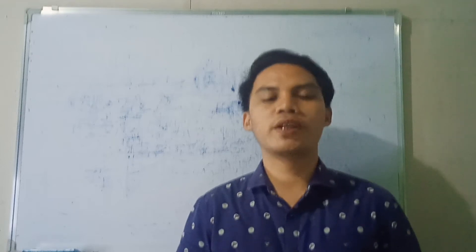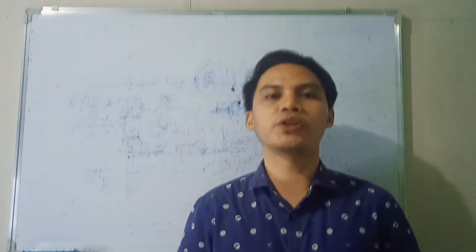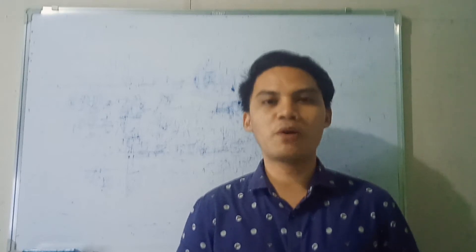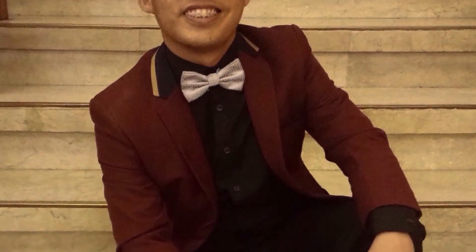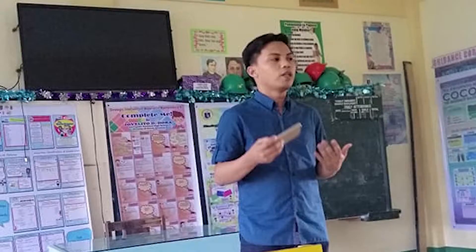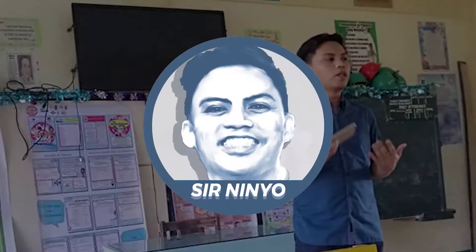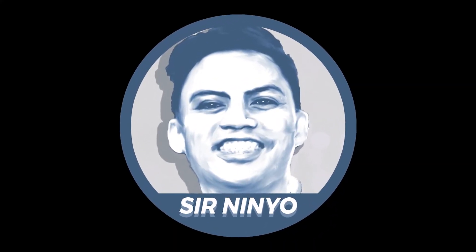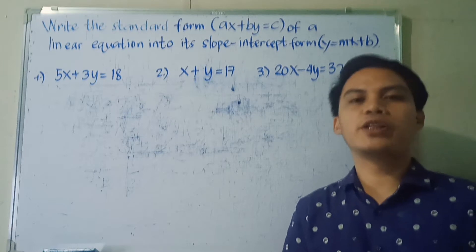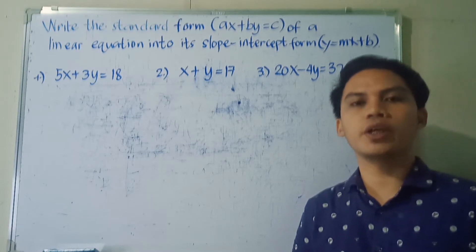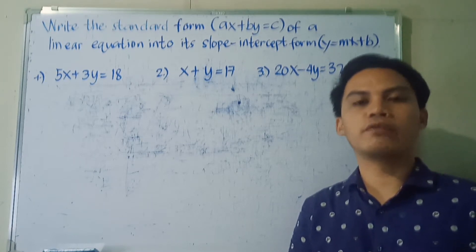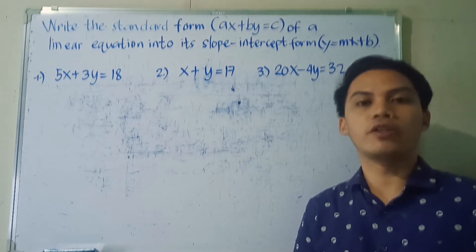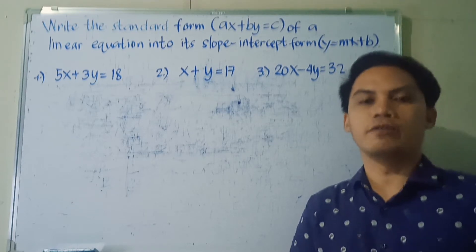How are we going to transform the standard form of a linear equation into its slope-intercept form, and vice versa? What we're going to discuss now is how to change the standard form of a linear equation into its slope-intercept form, and vice versa.